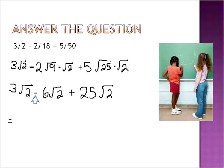3 root 2 minus 6 root 2 is equal to negative 3 root 2. And then we'll add on 25, a positive 25. And we'll end up with the result of 22 square root of 2. And that'll be your final answer for that question. I hope this has been a helpful mini lesson. Have a wonderful day.